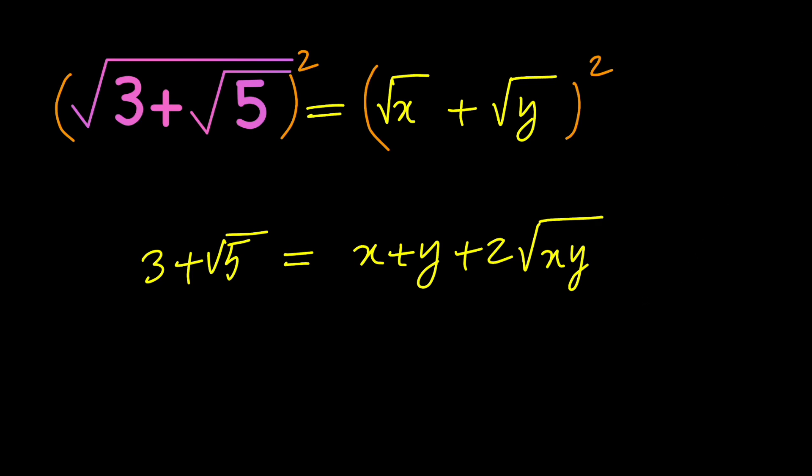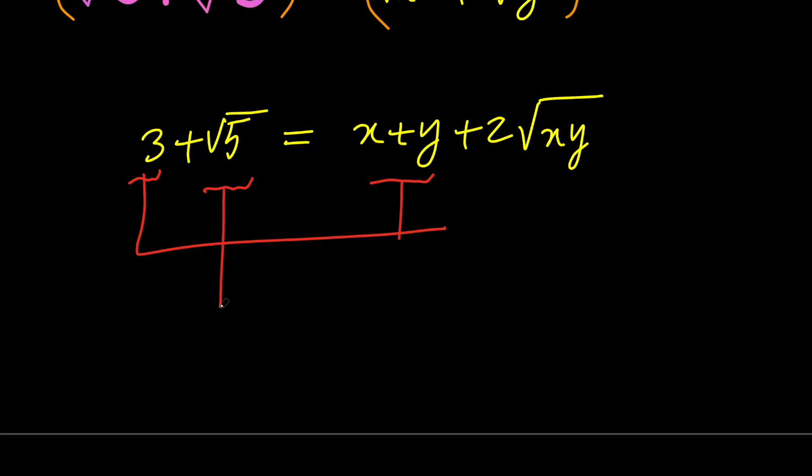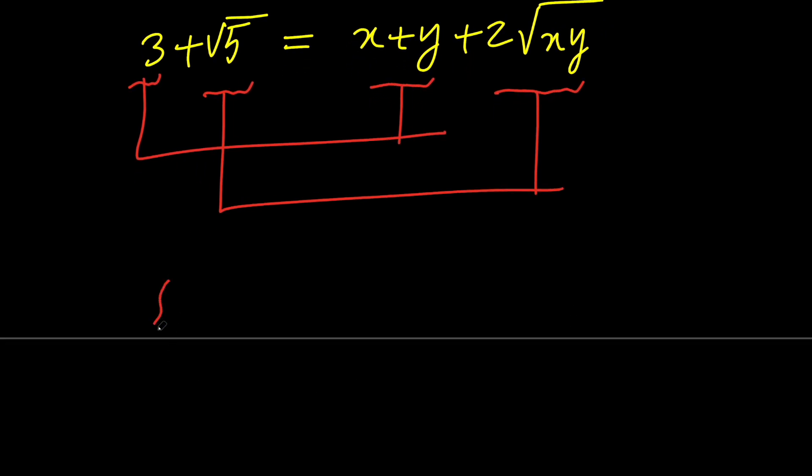Next, if we compare both sides, it is obvious that 3 is equal to x plus y, and root 5 is equal to 2 times the square root of x times y. So basically, we have a system of equations in terms of x and y. We have x plus y equals 3, and 2 times the square root of x times y equals root 5.